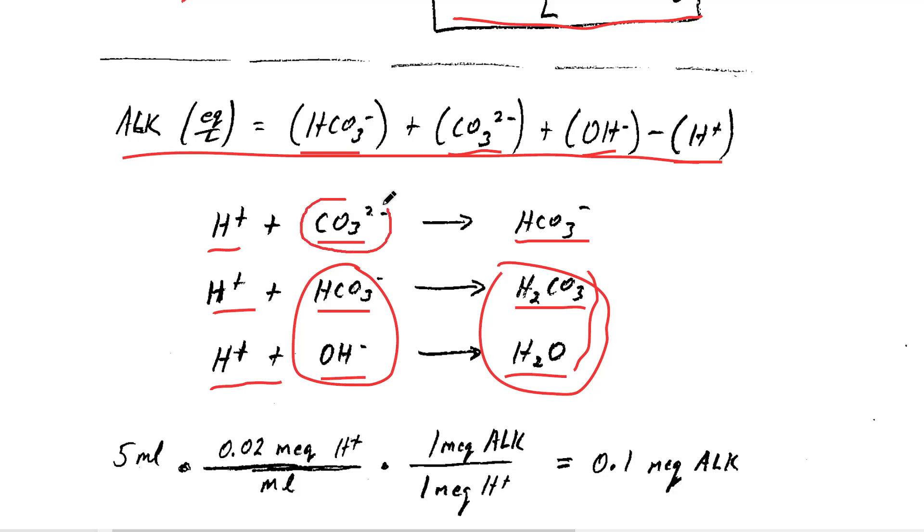In this case, we had two equivalents of alkalinity because of the two minus charge on the carbonate ion, and that was converted to one equivalent of alkalinity. So even in this case, one equivalent of hydrogen ion is burning one equivalent of alkalinity. It's not really burning, but it's reacting that alkalinity away.